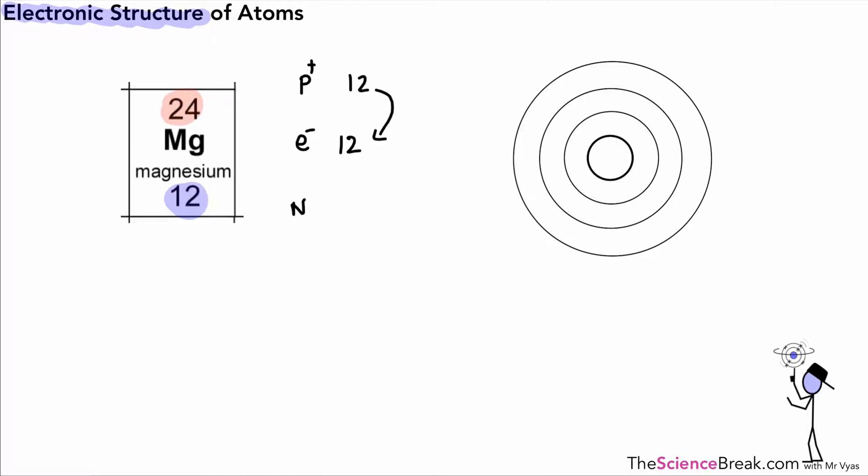This is our mass number and this was protons plus neutrons. So if you wanted to work out the number of neutrons, we just take away 12, which is the protons, from 24, which is protons and neutrons. So 24 take away 12 gives us an answer of 12. So we have 12 protons, 12 electrons, and 12 neutrons.